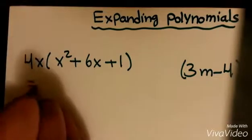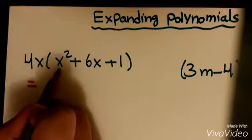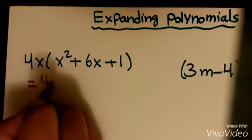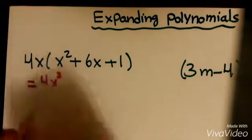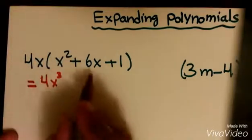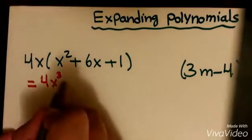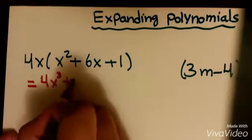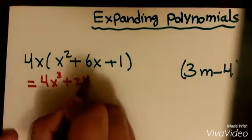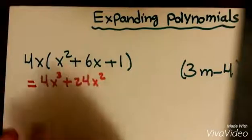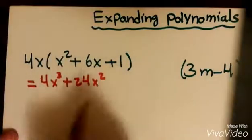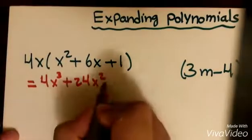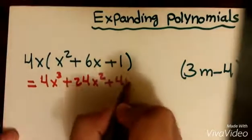So, 4x times x squared is 4x cubed. 4x times 6x is positive 24x squared. 4x times 1 is positive 4x.